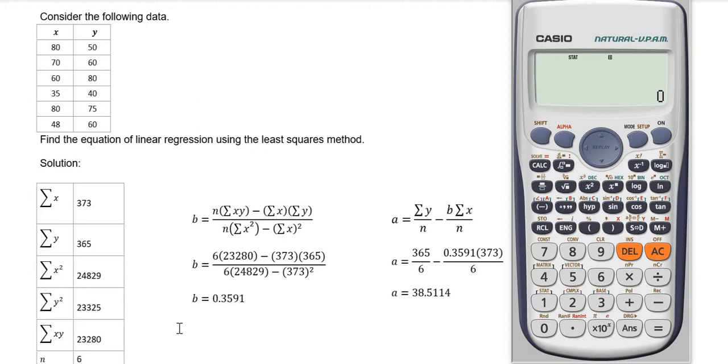The first step is to reset your calculator mode. Press the shift button, then press 9, then press number 3, then press the equal sign button, and then press the AC key.